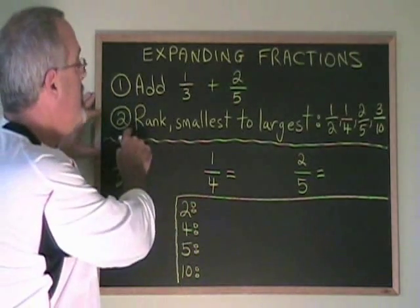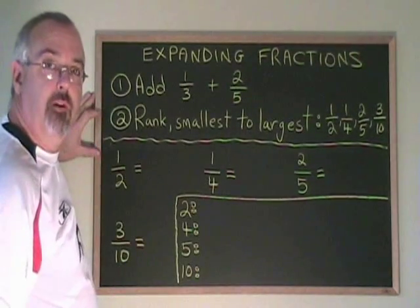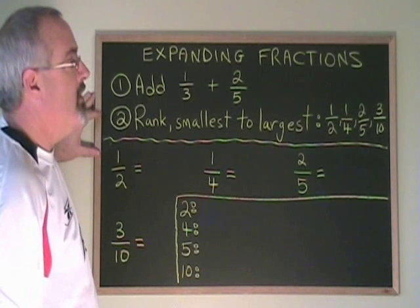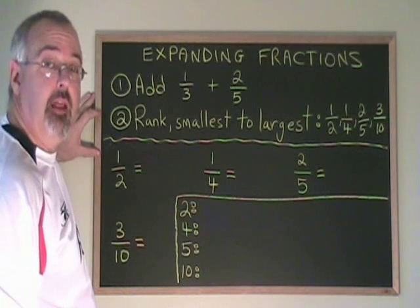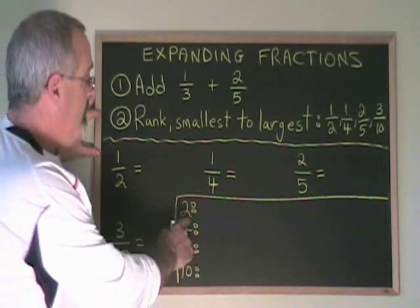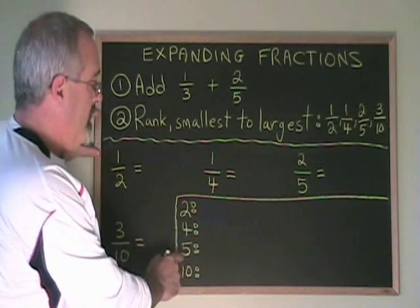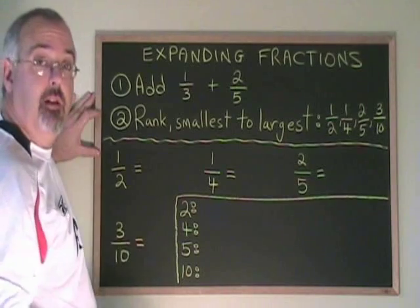Now let's look at question 2, where we're ranking these four fractions. We need them to be over a common denominator so that we can compare them and then rank them. So we will find the multiples of 2, 4, 5, and 10, and find the lowest common multiple.